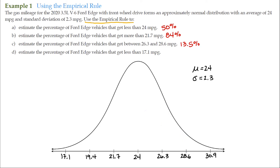Finally, Letter D: estimate the percentage of Ford Edge vehicles that get less than 17.1 miles per gallon. Here's 17.1 right here, and we're just talking about this small tail going off into infinity. Using the empirical rule, that's 0.15%. The answer is 0.15%.